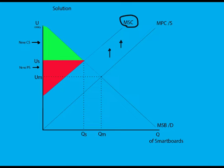This causes the market to operate at the socially optimal level, also creating a new allocatively efficient point, increasing the utility of the high school while also removing the deadweight welfare loss, creating a new consumer and producer surplus.